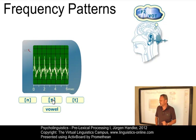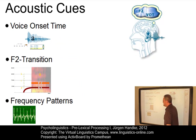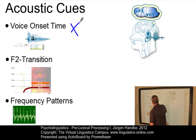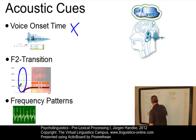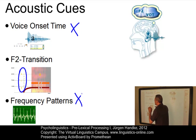Having discussed the three central acoustic or perceptual cues — voice onset time, F2 transition and the locus of F2, and frequency patterns — let us now see whether there is a central unit on the basis of which we segment the incoming signal.